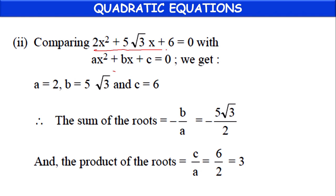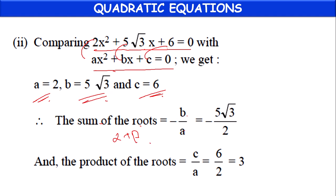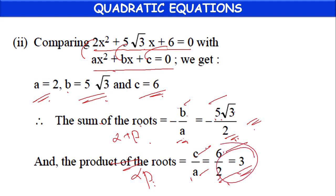Second equation: 2x² + 5√3 x + 6 = 0. Comparing with general form, a = 2, b = 5√3, c = 6. Sum of roots alpha + beta = -b/a = -5√3/2, because b value is 5√3 and a value is 2 — just substitute the values. Product of roots alpha × beta = c/a = 6/2 = 3. Like this we can find them.